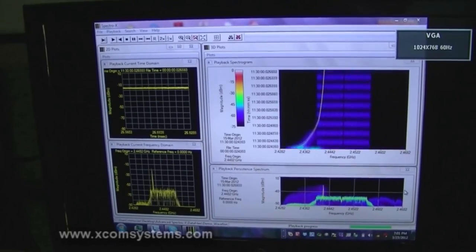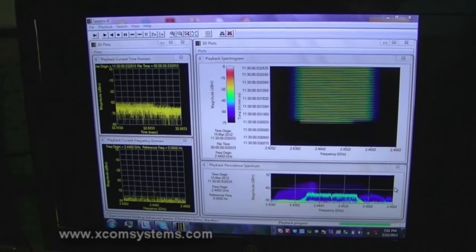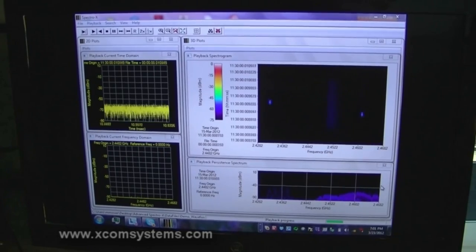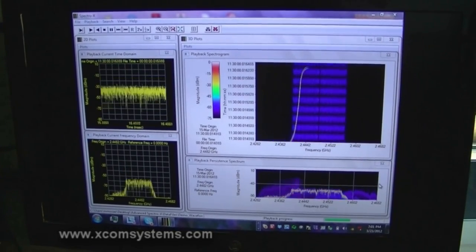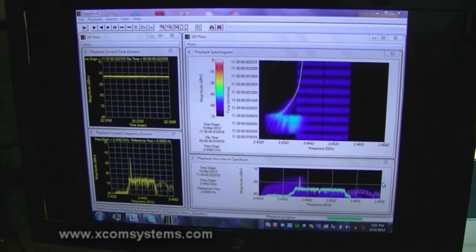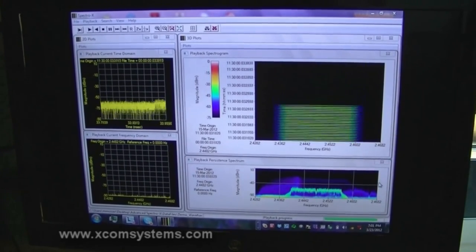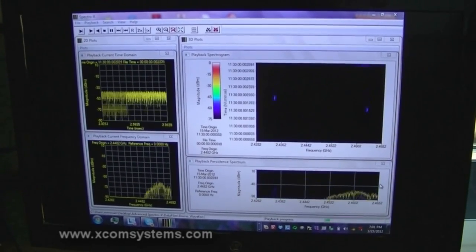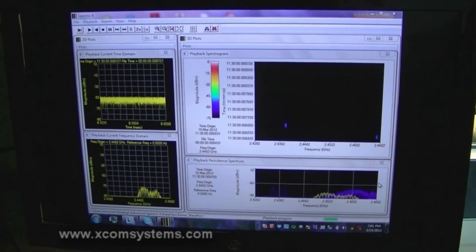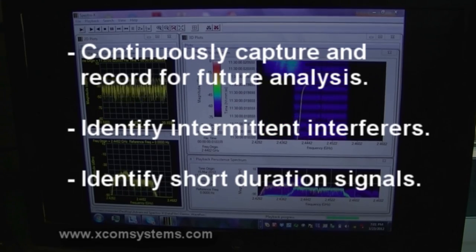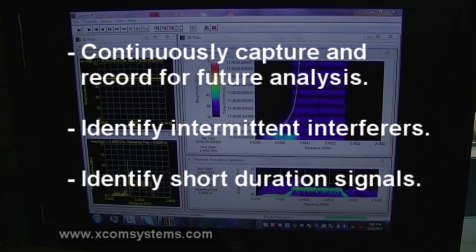In parallel with real-time spectrum monitoring, the XCOM Mobile RF Spectrum Monitoring and Emitter Location System can continuously capture and record, for future analysis or regulatory compliance documentation, large segments of the RF spectrum for hours or days. This capability is particularly useful when dealing with short-duration or infrequent signals that may be virtually impossible to capture any other way.